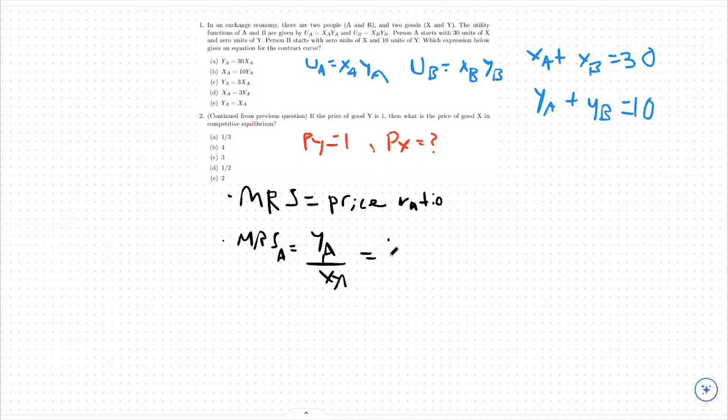And then we're going to set that equal to the price of good x over the price of good y, which is our price ratio. From there, we can make some substitutions. In fact, we can note that yA over xA is actually just equal to px because py is known to be 1.